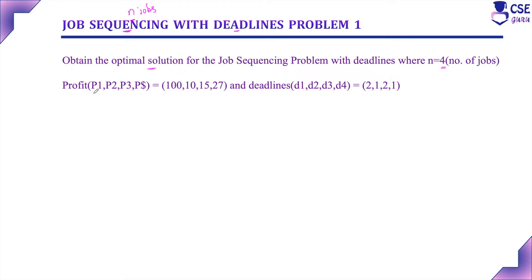The profit of each job — P1, P2, P3, P4 — is 100, 10, 15, and 27. And the corresponding deadline D1, D2, D3, D4 are 2, 1, 2, 1. So this is the given problem: 4 jobs, each with its corresponding profit and deadline.